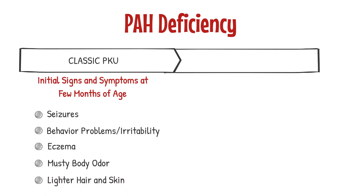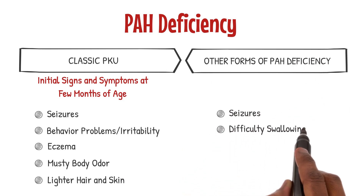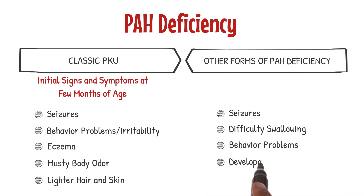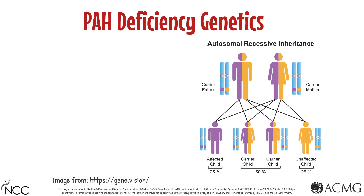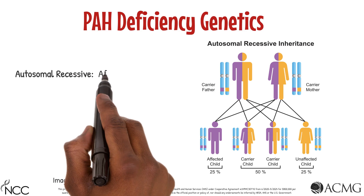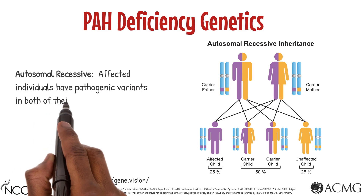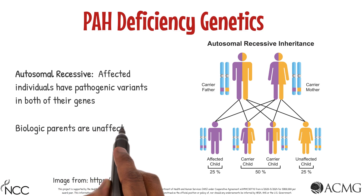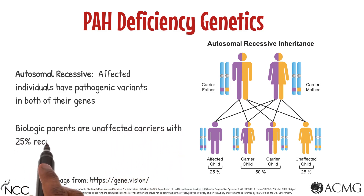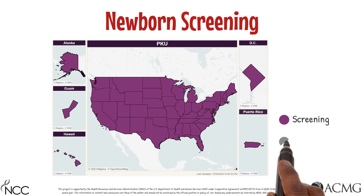Those with other forms of PAH deficiency can also have seizures, difficulty swallowing, behavioral problems, and developmental delay, with onset from months to years. All forms of PAH deficiency are inherited in an autosomal recessive manner, meaning that only infants with a pathogenic variant in both genes will be affected. Parents with a child with PAH deficiency are carriers and are unaffected, but have a 25% recurrence risk with any future children they have together.